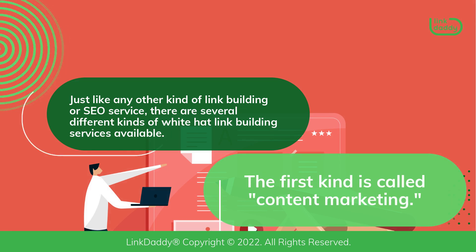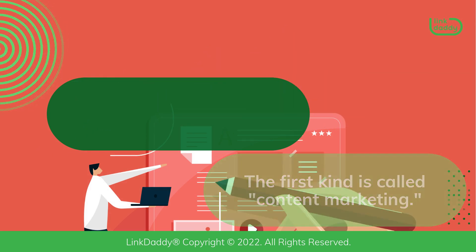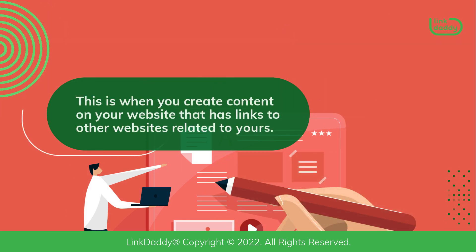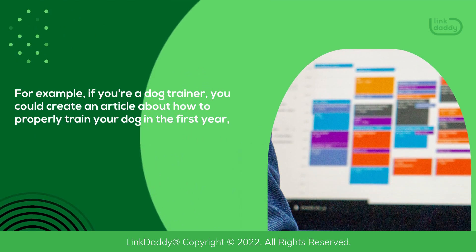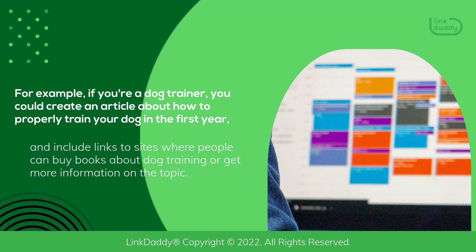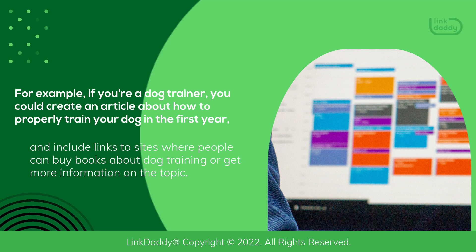The first kind is called Content Marketing. This is when you create content on your website that has links to other websites related to yours. For example, if you're a dog trainer, you could create an article about how to properly train your dog in the first year, and include links to sites where people can buy books about dog training or get more information on the topic.